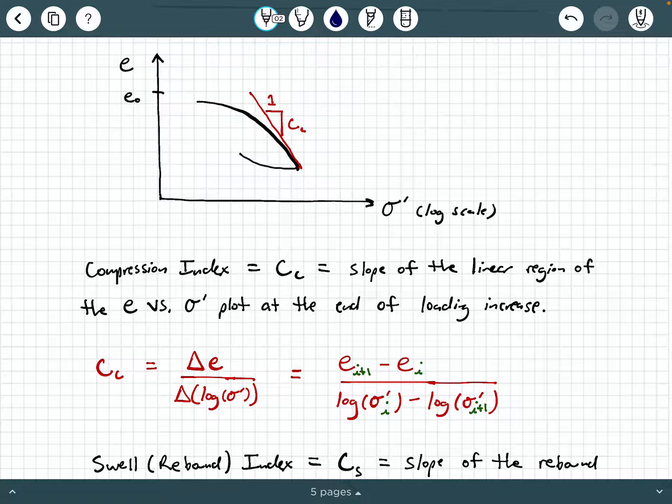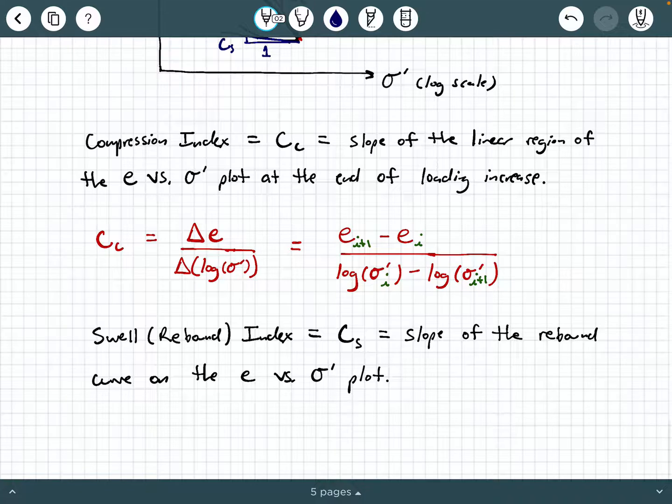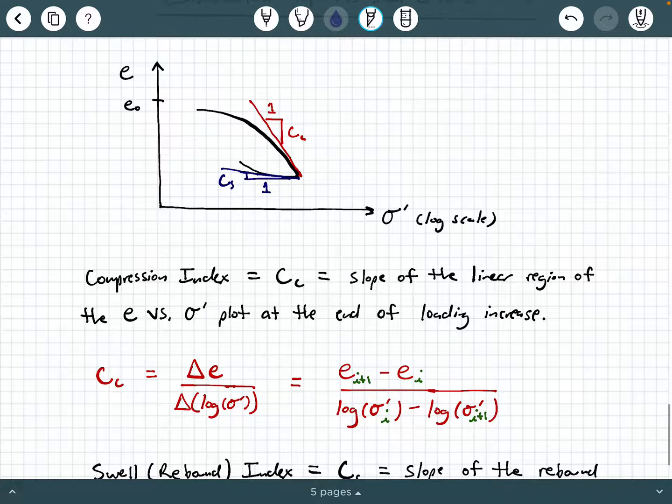And so what we do here to get C sub S or the swell index, we look at this rebound region and we're going to again go where it's approximately linear, which is going to be about right here. We're going to project this straight line. We're going to have a much smaller value. That's going to be C sub S. And again, it's going to be calculated as a delta e over delta log effective stress computation, but it's specifically affiliated with this rebound region. You're shooting a tangent line off from the start of the rebound region.